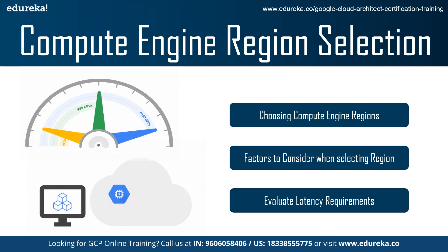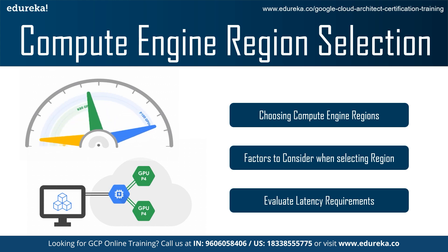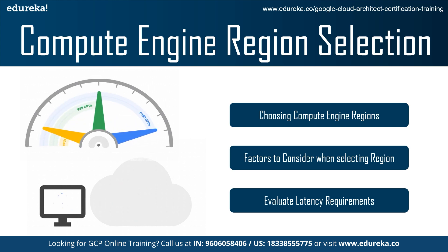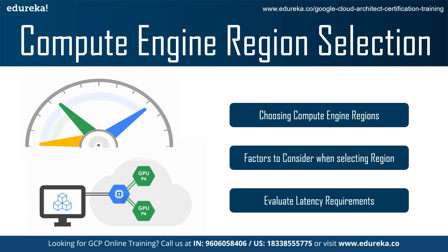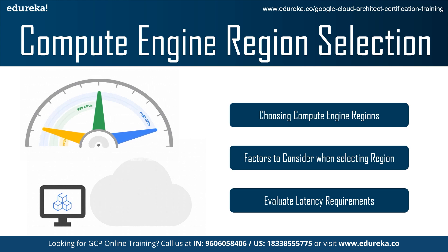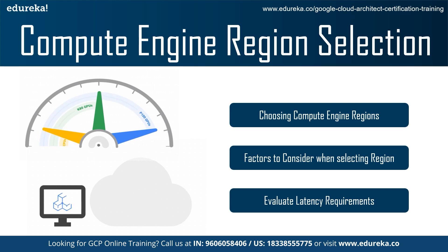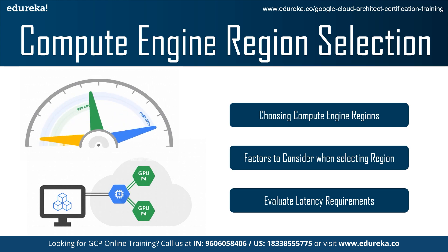The third subcategory is Compute Engine region latency. The user request enters Google's network at the edge PoP; the Compute Engine region is where Google Cloud services handling requests are located, and this segment is wholly within Google's global network. The fourth subcategory is app latency — different apps have different latency requirements. Apps that interact asynchronously or mobile apps with a high latency threshold of 100 milliseconds or more can be deployed in a single region without degrading user experience. However, for apps such as real-time games where a few milliseconds of latency matters, deploy these types of apps in multiple regions close to the users.